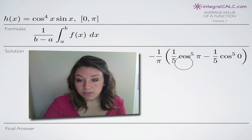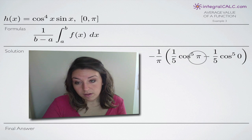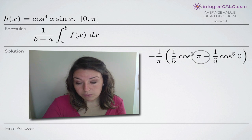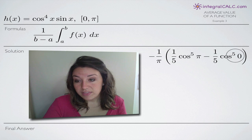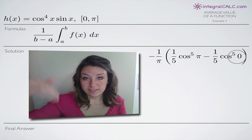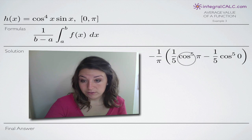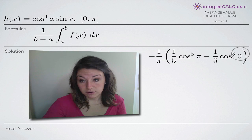We plug in pi to one-fifth cosine to the fifth of x, then subtract, then plug in zero. Whenever we're evaluating a definite integral, we plug in the top number — which is pi — first. Then we always subtract in the center and plug in our bottom number, which was zero.